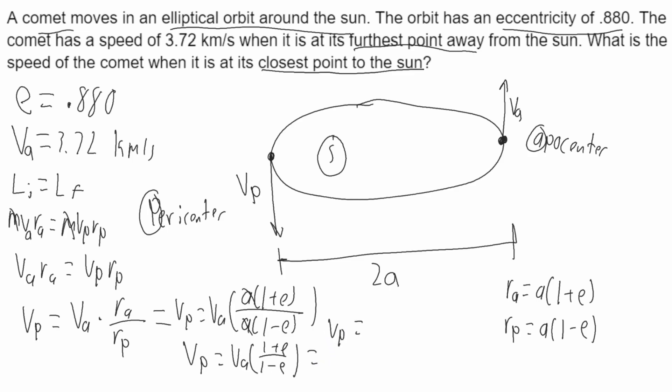So V_P, when I plug in numbers, will be equal to 3.72 times 1 plus 0.880 over 1 minus 0.880, and we'll get that V_P is equal to 58.28 kilometers per second. And that is your final answer. Thank you for watching.